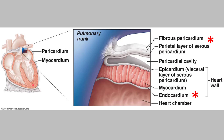The top chambers of the heart are called the atria — a right and a left atrium — and the bottom chambers are the ventricles — a right and a left ventricle. The atria are not really involved in pumping blood; they contract just a little but don't play a major pumping role, so their walls are thin. The ventricles do the pumping, so their walls are really thick.